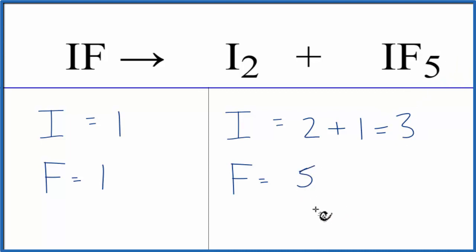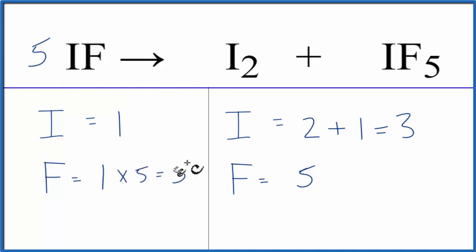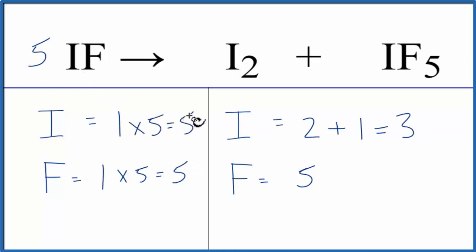What I'll do is put a five in front of the iodine monofluoride (IF). That way one times five balances the fluorines, and one times five gives me five iodine atoms.